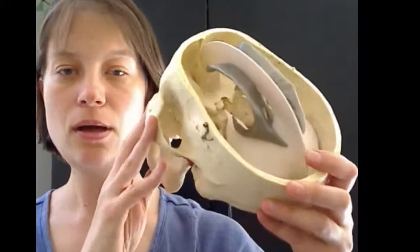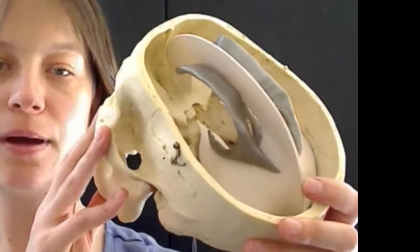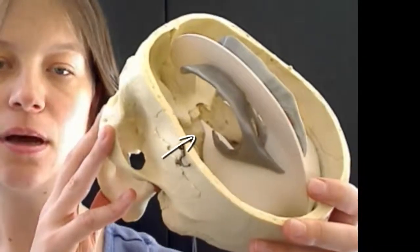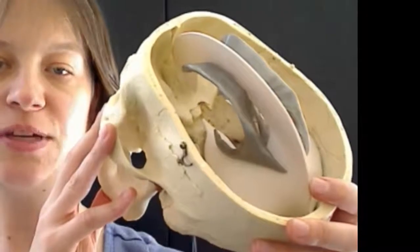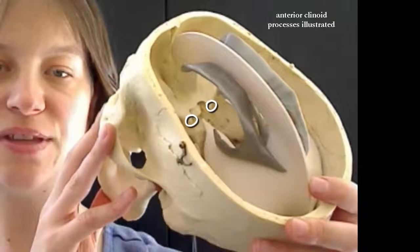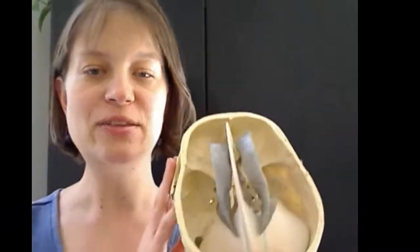Here you can see the tentorium as it runs from the occiput and anchors on the sphenoid, the clinoid processes of the sphenoid. Now, I want to give a caveat that this particular model, the skull and these membranes and this ventricle model, were not designed for each other. So it's an approximate fit.